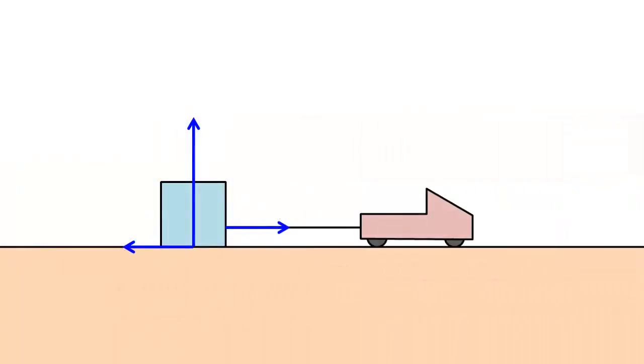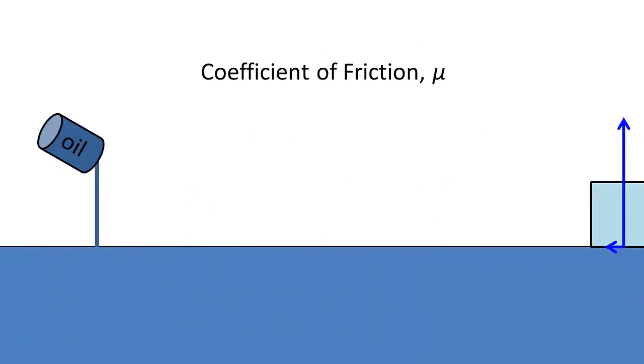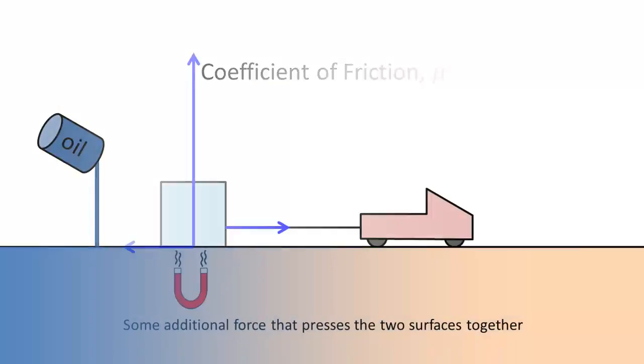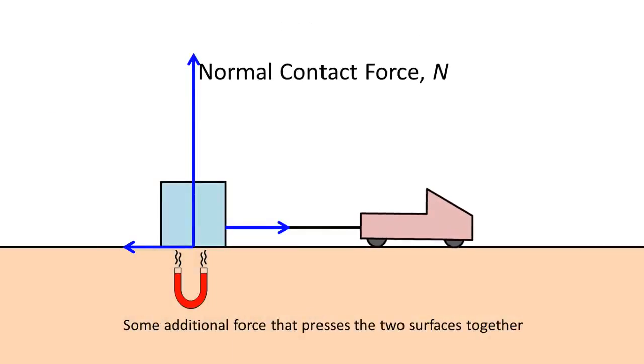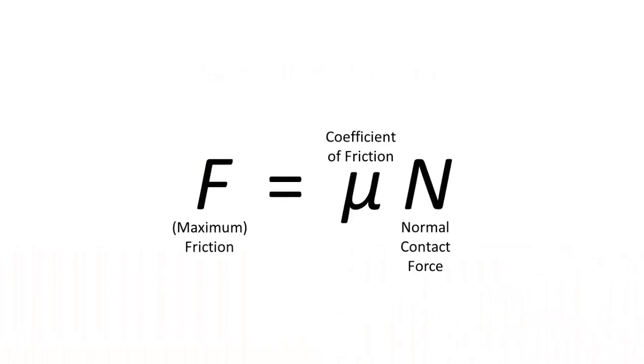The maximum friction is dependent on two factors: the stickiness of the two surfaces, and how strongly the two surfaces are pressing into each other. This is usually summed up in the expression F equals μN.